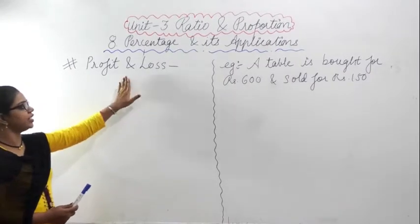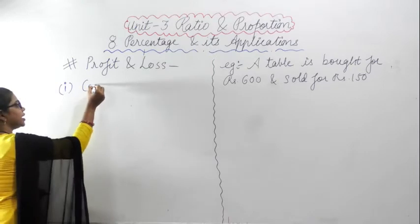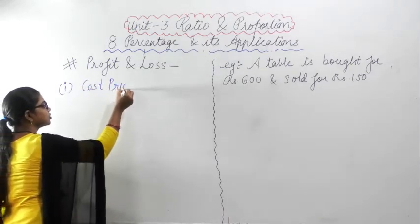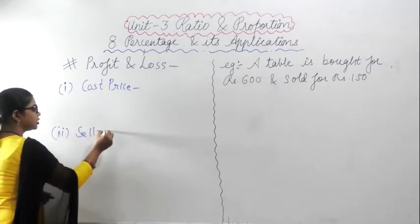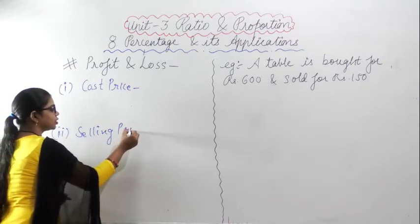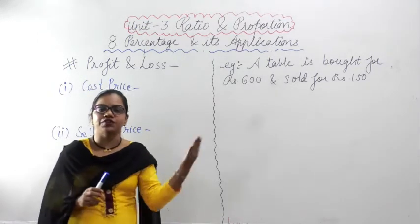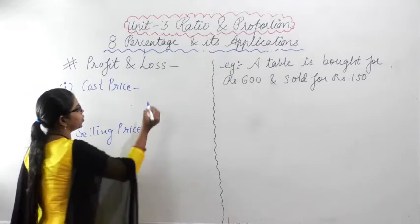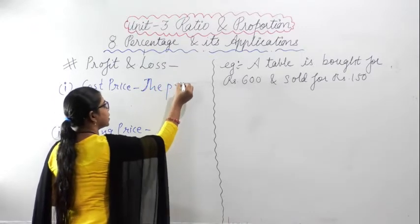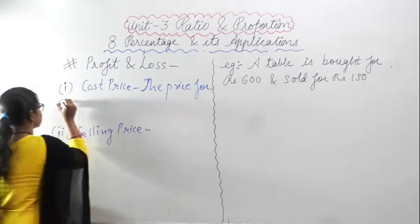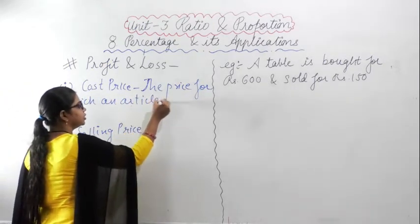The second topic is profit and loss. Here we will study two terms: cost price and selling price. Cost price means the price for which an article is bought.